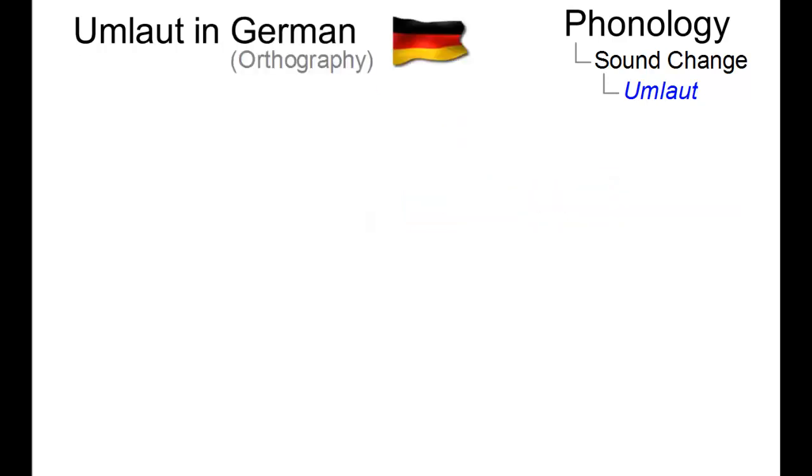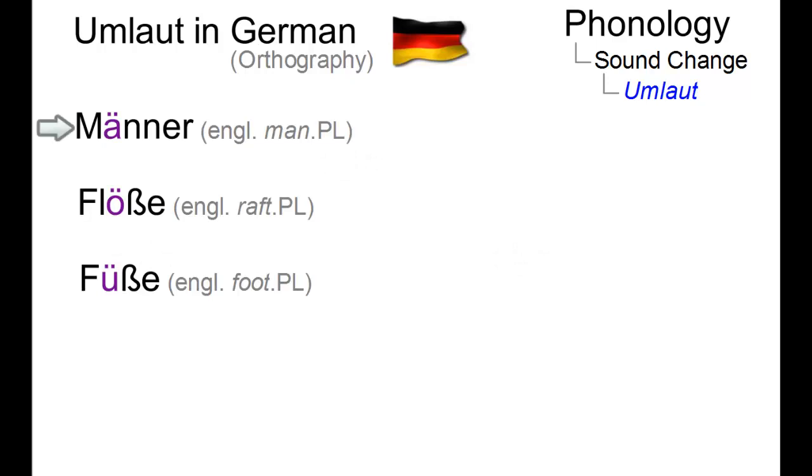In German, the term umlaut is also used for those characters in the German alphabet that denote sounds which resulted from historical umlauting operations. Ä as in Männer, Ö as in Flöße, and Ü as in Füße.